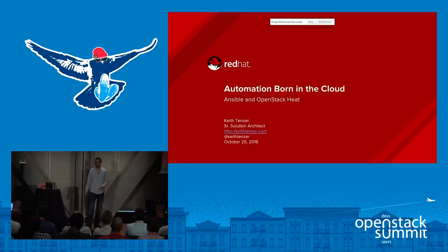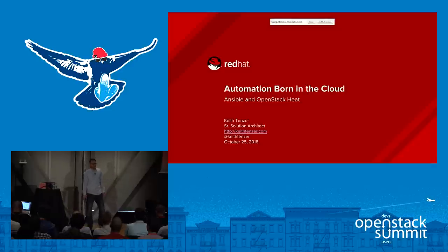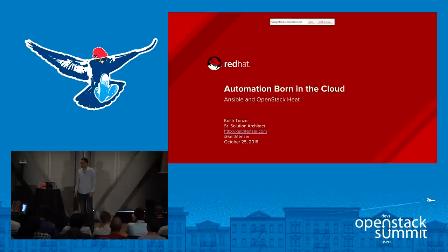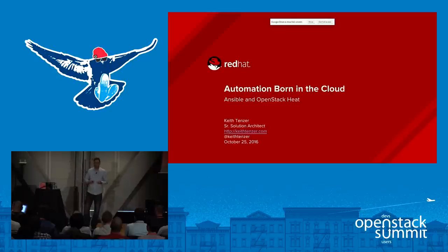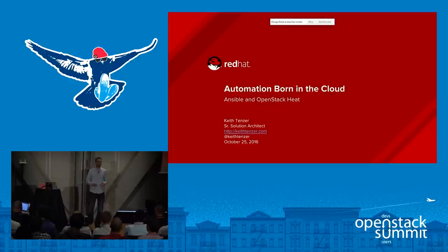I'm going to show you how this actually works with a demo — hopefully it works. The recipe for the demo is on my blog at keithtenzer.com, so if you want to do this at home it's all documented. A couple of key takeaways: operational automation really means two things — provisioning, meaning a provisioning platform and what that automation looks like, as well as application deployment. Until we have application deployment, we don't really have any business value.